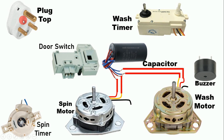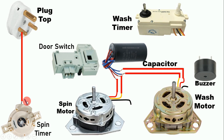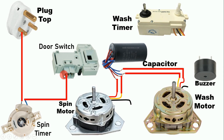From the right-hand side pin of the plug top we get the phase supply. Connect a wire from this pin to the spin timer input, then from the outgoing terminal of the spin timer connect a wire to one terminal of the door switch. In the door switch you will find three terminals but you only use two. Use a multimeter to identify the NO contact — you will get one common terminal, one NC, and one NO contact.